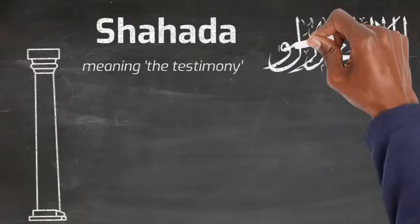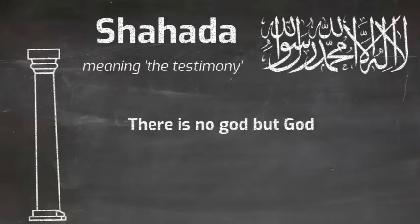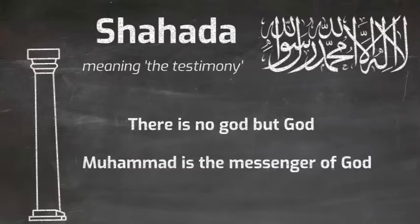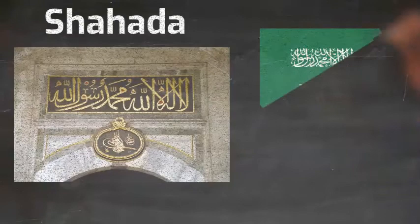Shahada is the profession of faith which has two parts. Firstly, there is no God but God, which asserts the monotheistic nature of Islam. Secondly, Muhammad is the messenger of God, which underlines the position of the words and deeds of the Prophet Muhammad as an example to Muslims. He is the messenger, not a messenger. The Shahada can be seen written in Arabic on buildings such as the Topkapi Palace in Istanbul and also on flags of Islamic countries such as Saudi Arabia and Afghanistan.